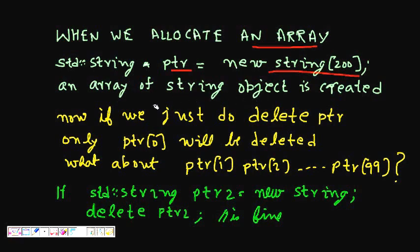What happens now if we just do delete? So ptr to ptr[199]. Now if I do just delete ptr, what will happen is it will call the destructor of ptr[0] and it will be deleted. But what will happen is that ptr[1], ptr[2] till ptr[199] they will not get deleted. So this is a problem.